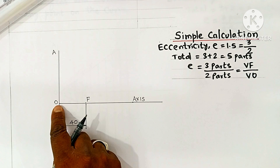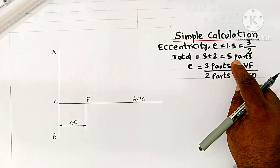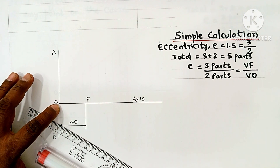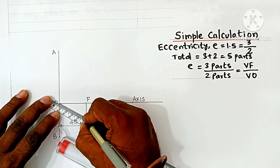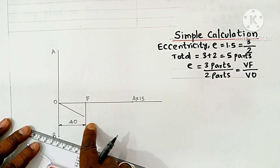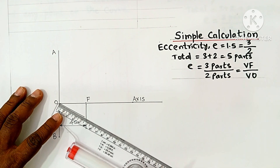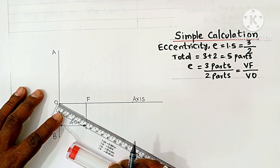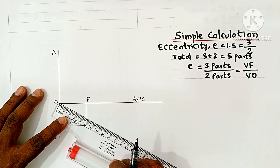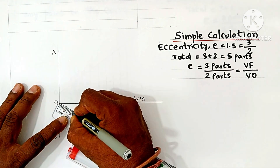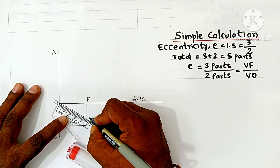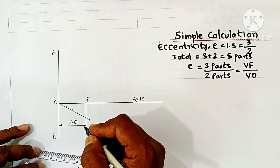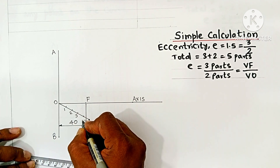Now divide OF into 5 equal parts, based on adding the numerator and denominator. Draw an inclined line from point O at any angle, choosing a length that is easily divisible by 5 — for example, 50 mm. 50 divided by 5 gives 10 mm per segment, so mark 1 cm intervals along the inclined line five times, numbering them 1, 2, 3, 4, and 5.